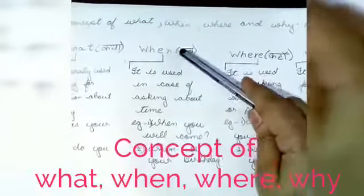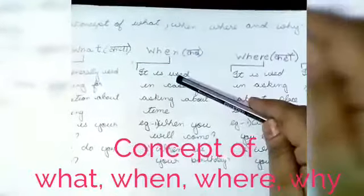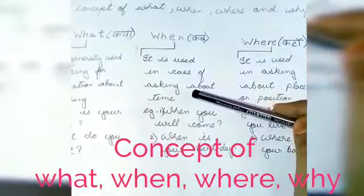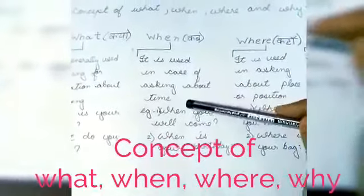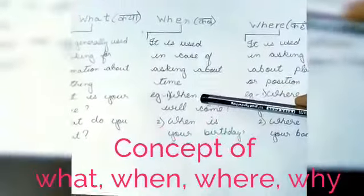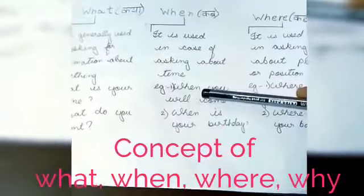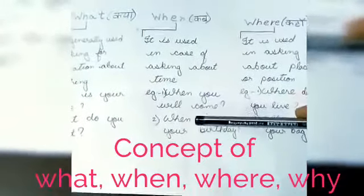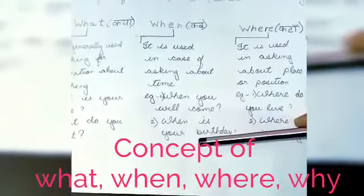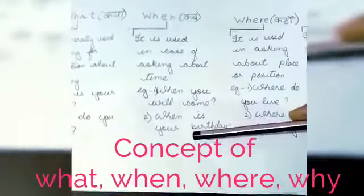After that, when. When means kab. It is used in case of asking about time. Example, when you will come? Tum kab aogay? When is your birthday? Tumhara janam din kab hai?